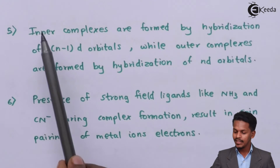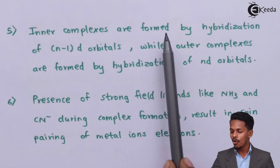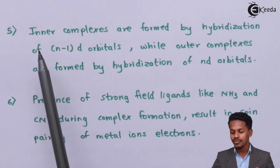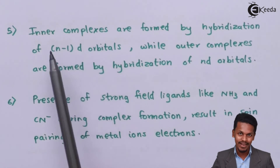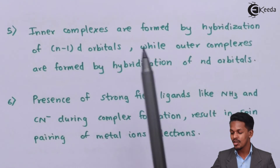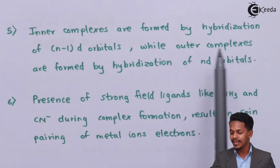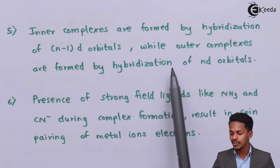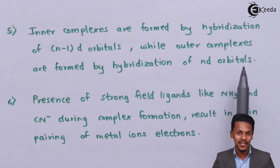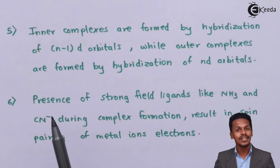The fifth point: inner complexes are formed by the hybridization of (n-1)d orbitals, while outer complexes are formed by the hybridization of nd orbitals.